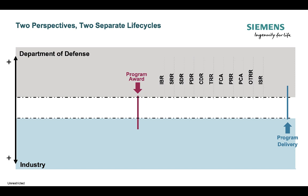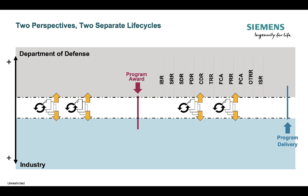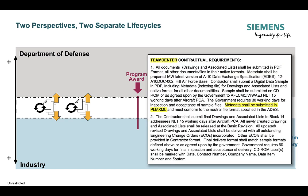If we think about this process, it's two organizations taking the intelligence they have in their organizations and dumbing it down to paper — giving paper back and forth, or in more modern times PDFs, but still paper. This is the state of affairs up until recently.